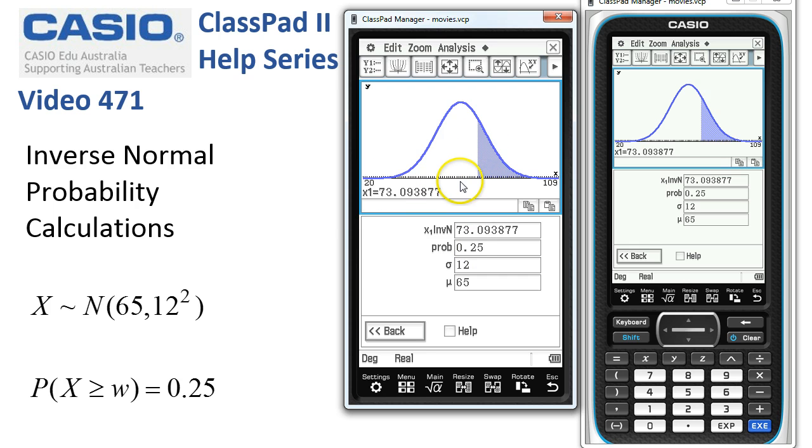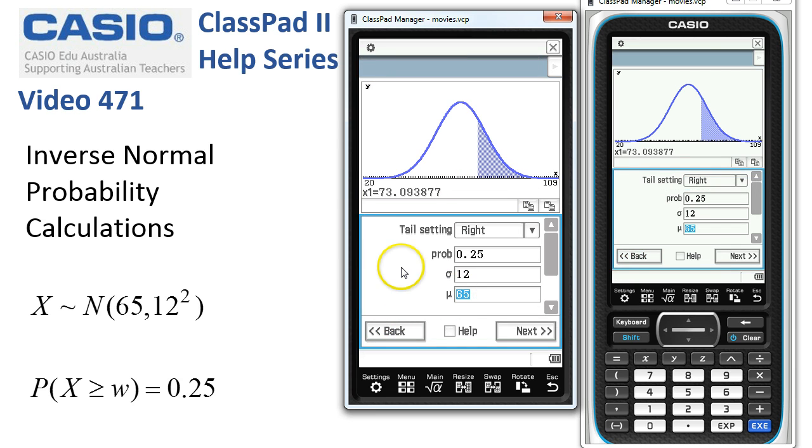So let's tap back. This time the next problem is we're after the values on our normal distribution that would contain the middle 90 percent. So that would mean we now need a center setting.